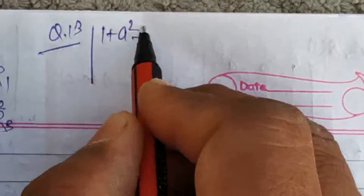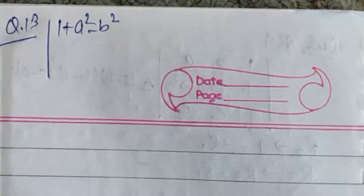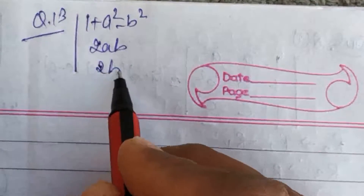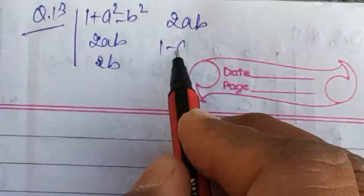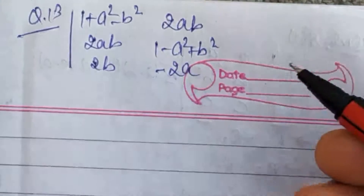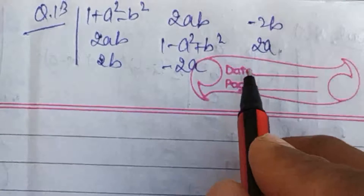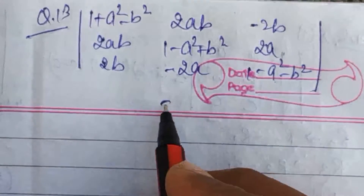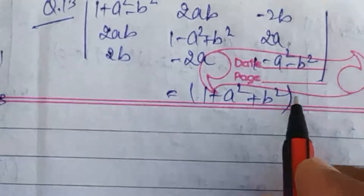The determinant has elements: 1 plus a square minus b square, 2ab, 2b; 2ab, 1 minus a square plus b square, minus 2a, minus 2b; 2a, 1 minus a square minus b square. This is equal to (1 plus a square plus b square) whole cube.